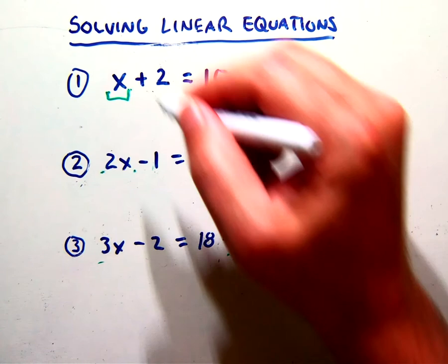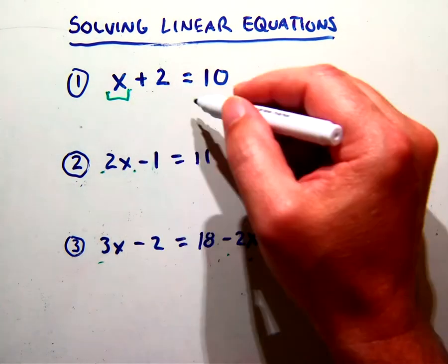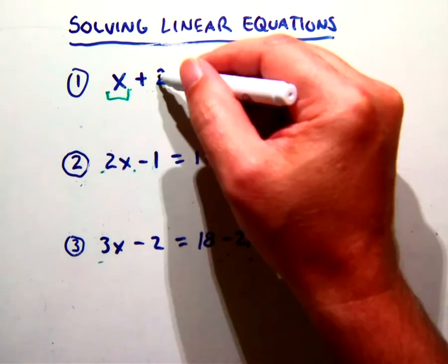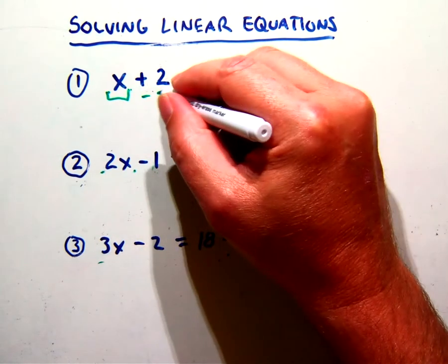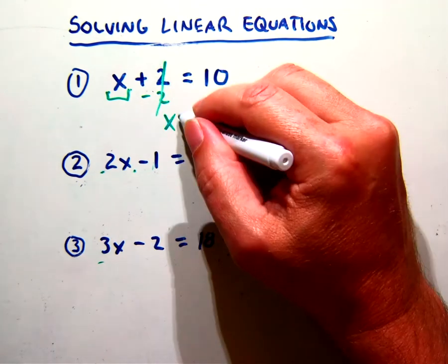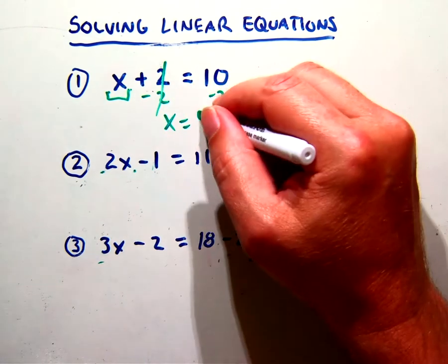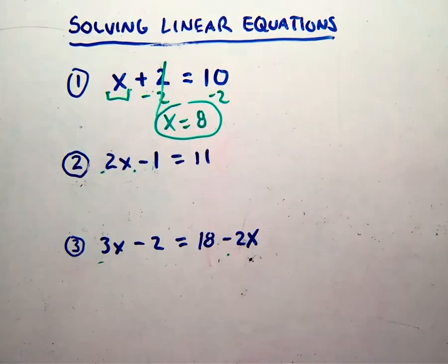So here we have the x. To get it alone, we're going to do the opposite of whatever's being done to it. You see it's being added to the x, so we're going to subtract it. We do it on one side, we do it on the other side. And x will be alone on this side, and it is equal to 8. So that's the first equation.